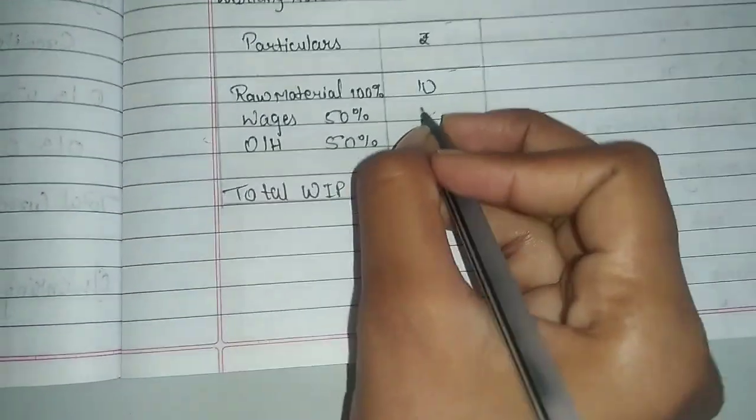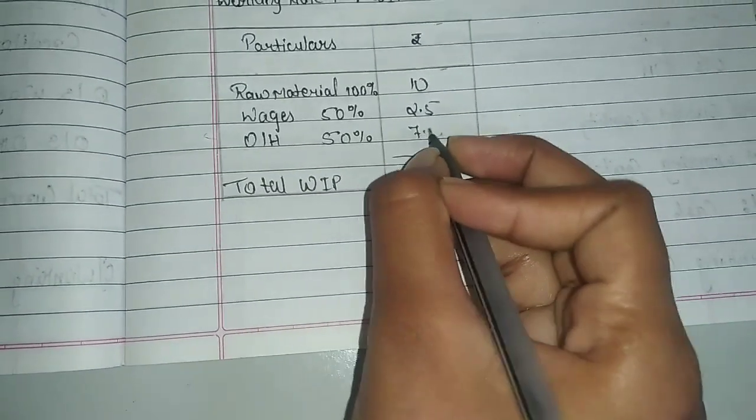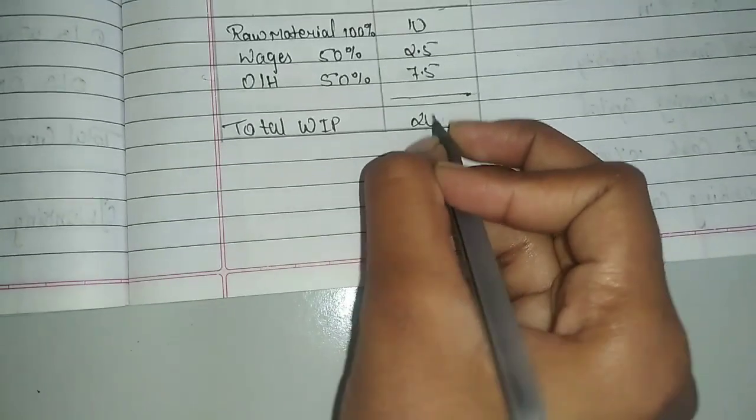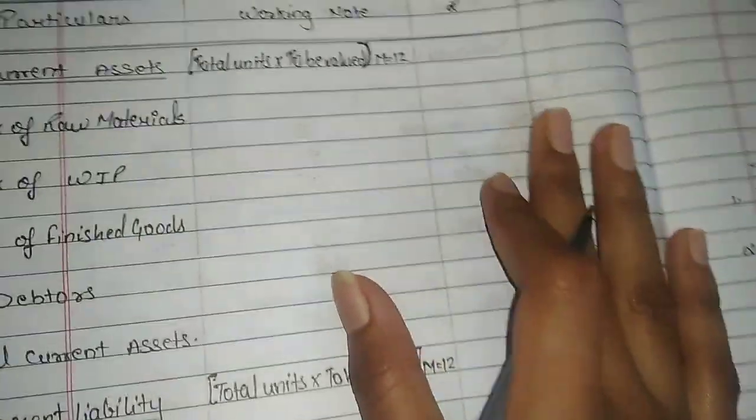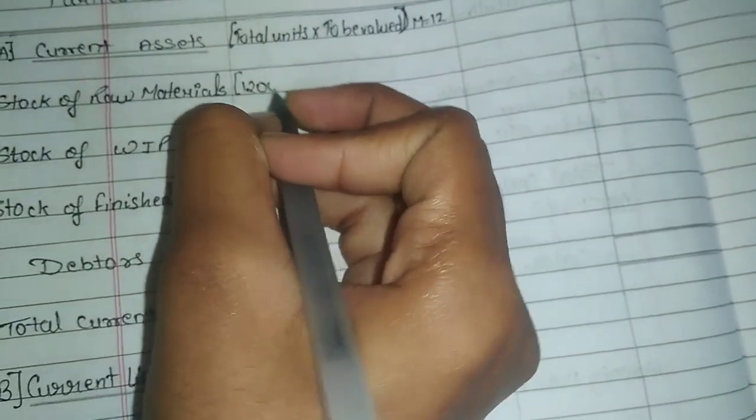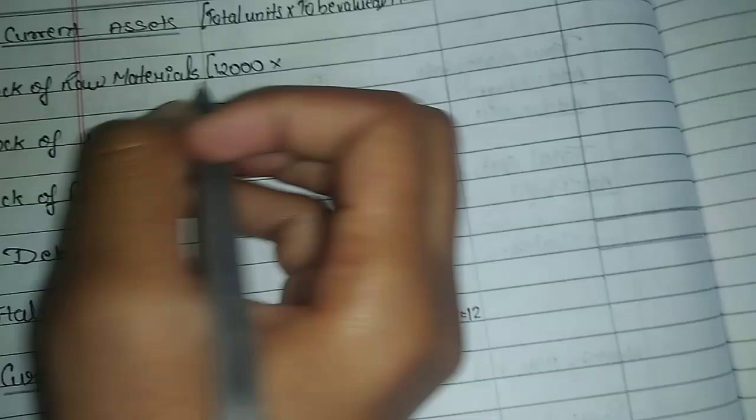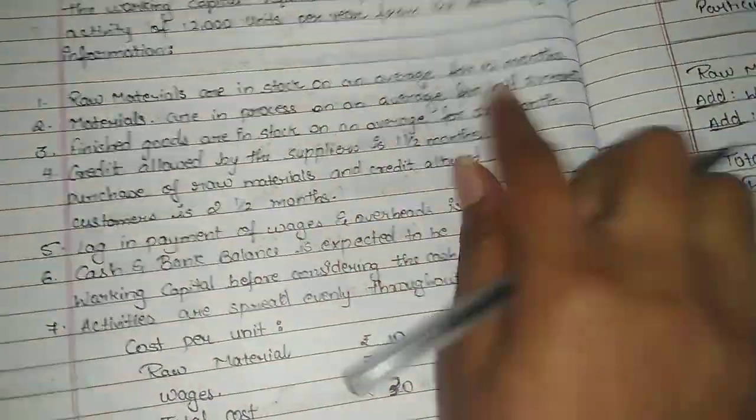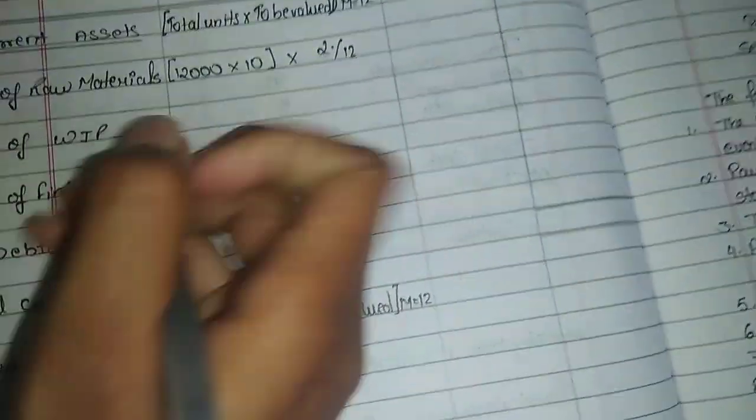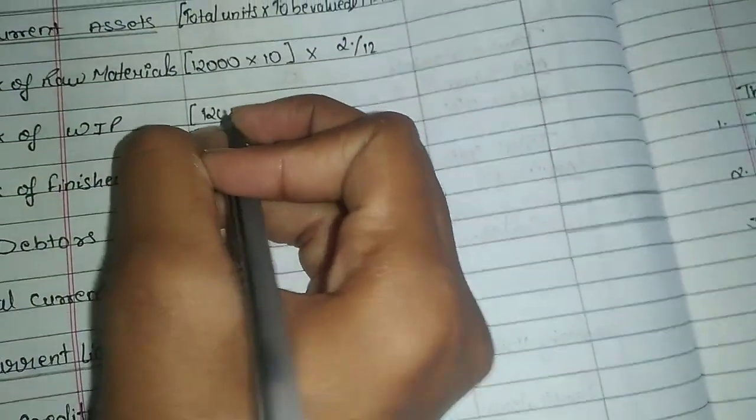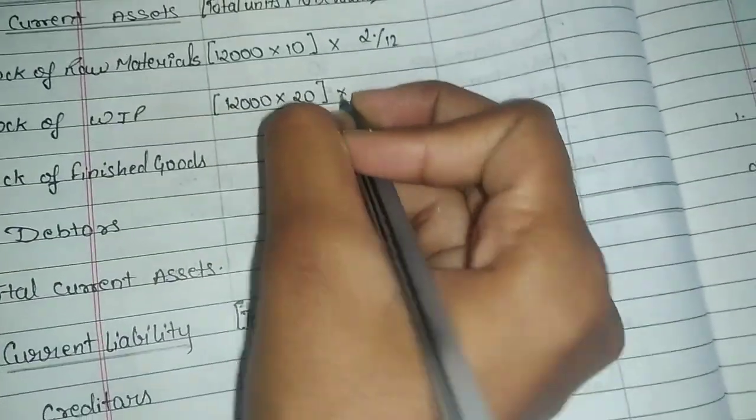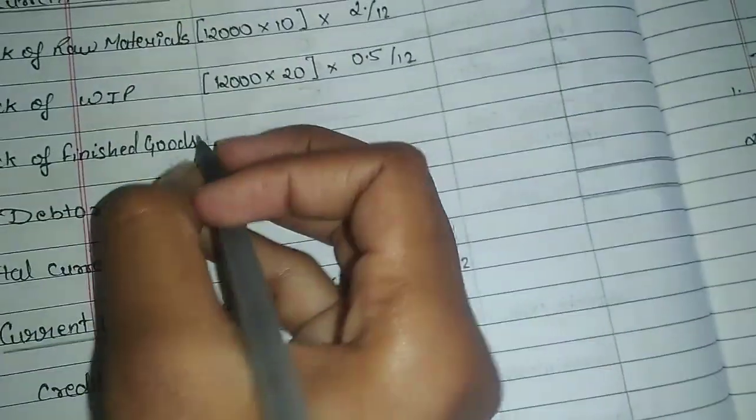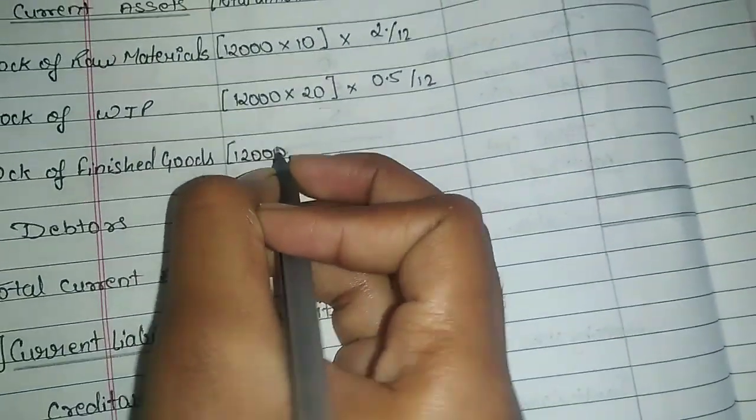Working capital number one for WIP: 100% of raw material that is 10, wages half is 2.5, and overheads half is 7.5, so total is 20. WIP total is 20. We have 12,000 units. Here we have total units 12,000 into 2, valued at raw material price that is 10. Raw materials kept for 2 months. WIP is 12,000 units into 20, half month 0.5 divided by 12.